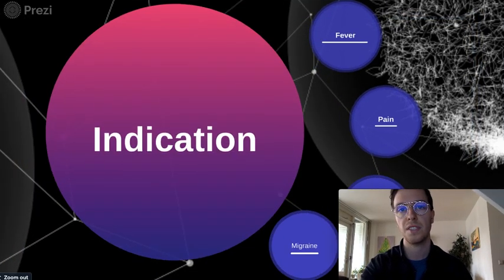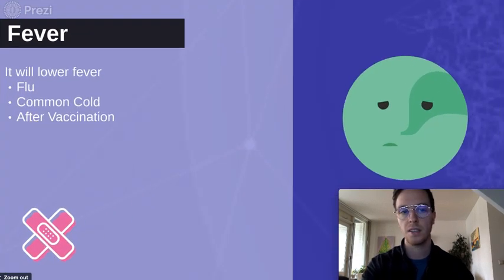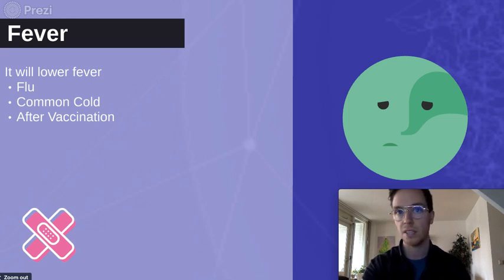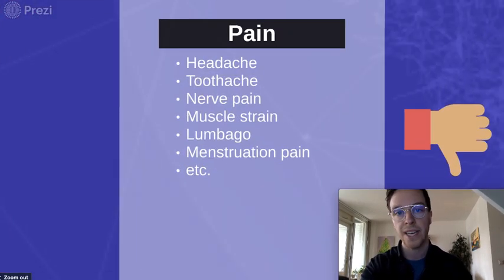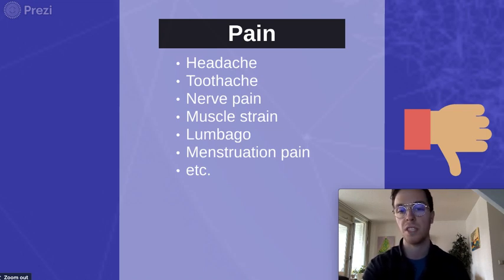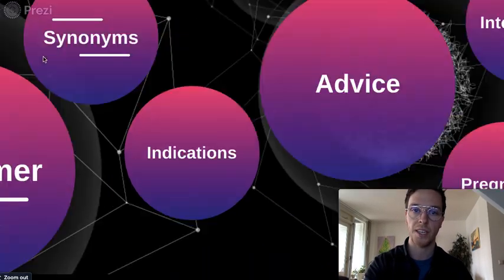Paracetamol is used for several different indications, but mostly to lower fever or to treat pain. For fever, it's used when someone has the flu, the common cold, or even after vaccinations, and it may lower the fever and make someone feel better. It's also prescribed for all kinds of pain: headaches, toothaches, nerve pains, menstrual pains, and more. Other indications include arthrosis — mostly hip or knee — and off-label it can be used for migraine, which we'll get into later.